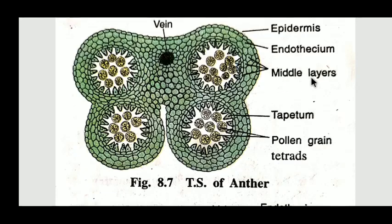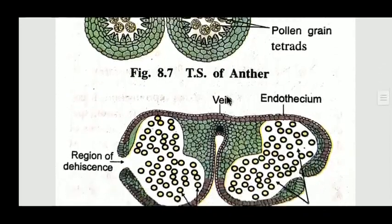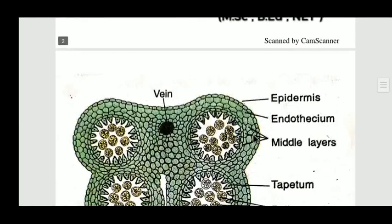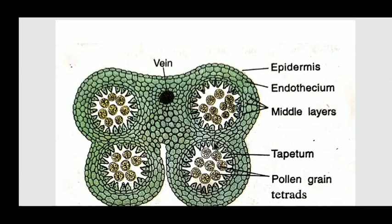The third layer is the middle layer. It is internal to the endothesium. It may be one to three layers — three layers are shown in the diagram with the help of an arrow. The middle layer may be a single layer, two layers, or a group of three layers. They are surrounded around the pollen sacs. This layer is degenerated at maturity. After formation of microspores, two pollen sacs fuse or merge with each other into one chamber. At that time, these middle layers break and degenerate, helping the pollen sacs to fuse with each other.